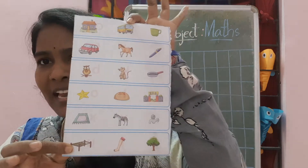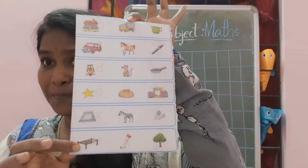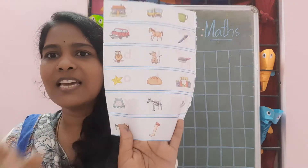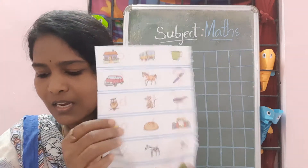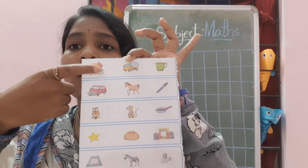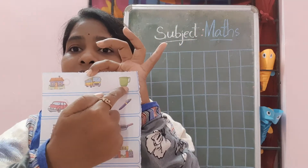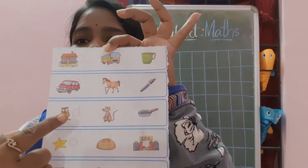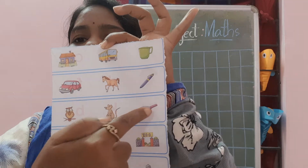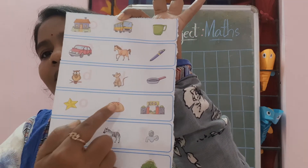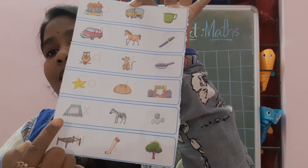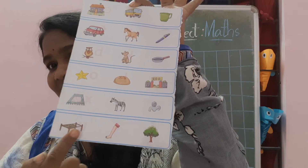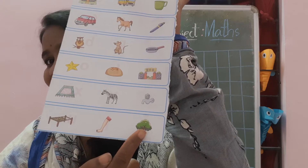What is there in my hands? Pictures, so many pictures, right? Now first count with me — how many pictures are there? Put your pointer finger on the picture. 1, 2, 3, 4, 5, 6, 7, 8, 9, 10, 11, 12, 13, 14, 15, 16, 17 and 18.